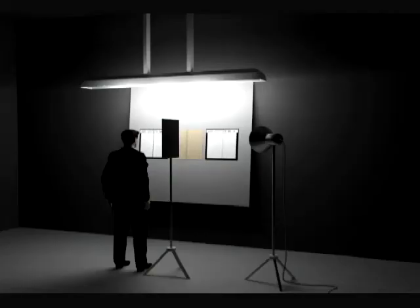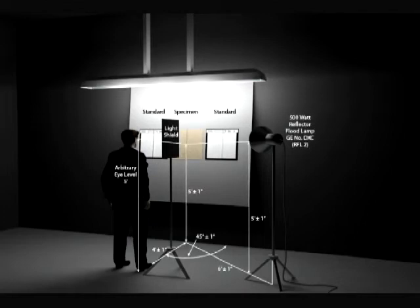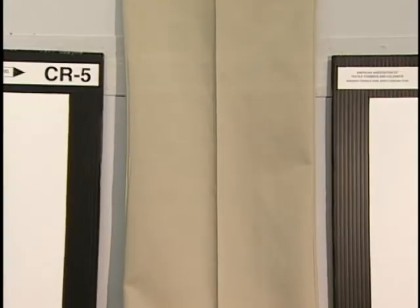A major difference in rating crease retention from other appearance ratings is that a flood lamp with a reflector and a light shield are positioned in the viewing area. The flood lamp and reflector are to the side of the viewing board and the rater. The flood lamp casts a direct light onto one side of the creased specimen, thereby casting a shadow on the other side of the crease, assisting the rater in making a more accurate rating. Only the sharpness of the crease should be evaluated, with the surrounding fabric appearance being disregarded.